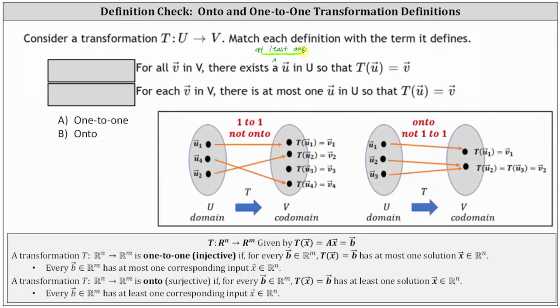The second definition states: for each vector v in the vector space V, there is at most one vector u in the vector space U such that T of vector u equals vector v.